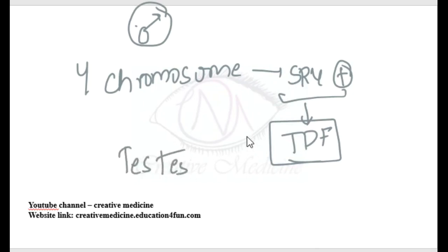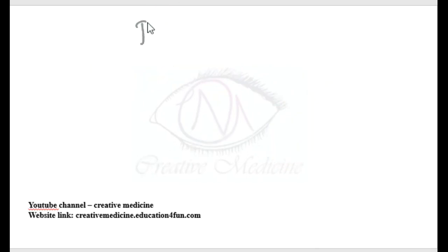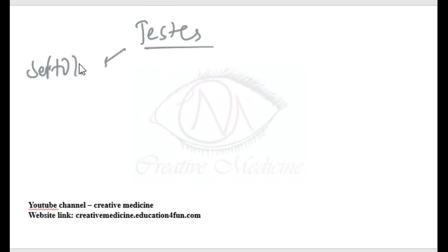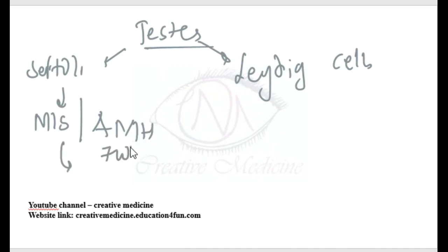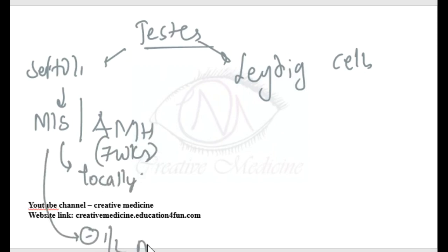Once the testis is formed, it contains two cells: Sertoli cells and Leydig cells. Sertoli cells will produce Müllerian Inhibiting Substance (MIS), also called anti-Müllerian hormone. This begins at seven weeks, and the hormone acts locally to inhibit ipsilateral Müllerian duct formation. Thus, Müllerian ducts, or paramesonephric ducts, will not form in males.